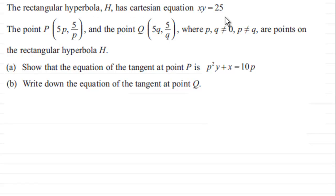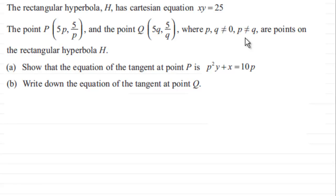So we've got here the rectangular hyperbola H with Cartesian equation XY equals 25. The point P has coordinates (5p, 5/p) and the point Q has coordinates (5q, 5/q), where P and Q do not equal zero and P doesn't equal Q. We're told that they are points on the rectangular hyperbola H.